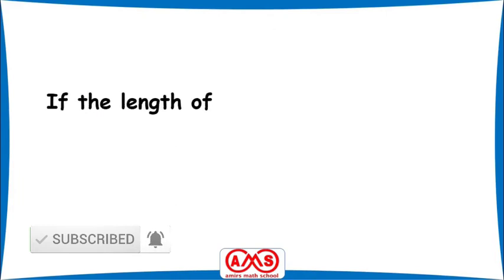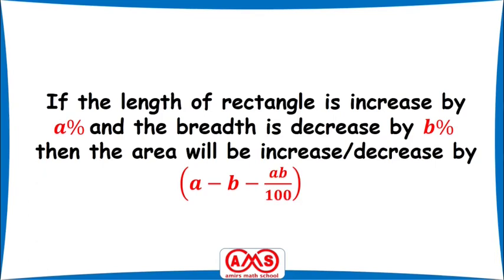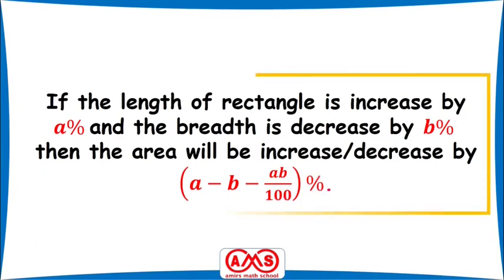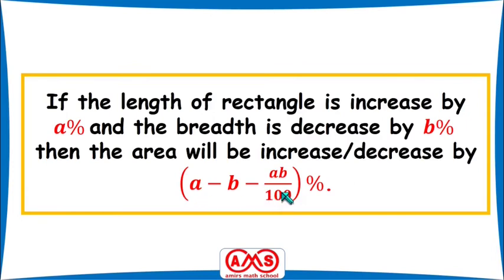The general formula is: if the length of a rectangle is increased by A percent and the breadth is decreased by B percent, then the area will increase or decrease by A minus B minus AB divided by 100 percent. Here A represents the percentage of length increase and B represents the percentage of breadth decrease. A positive result indicates an increase in area, and a negative result indicates a decrease in area.